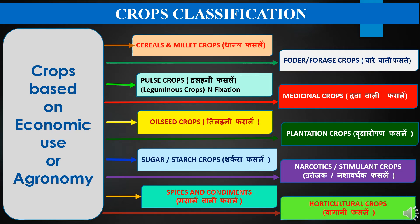Now we will study crops classification on the basis of economic use or agronomy. Crops are classified into different groups: cereals and millet crops, pulse crops or leguminous crops, oilseed crops, sugar or starch crops, spices and condiments, forage crops, fodder and forage crops, medicinal crops, plantation crops, narcotics or stimulant crops, and horticulture crops.